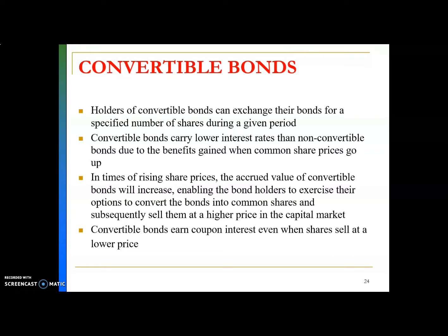Normally, convertible bond would carry lower interest rates than non-convertible bond. Convertible bond ni, dia punya coupon rate soalnya lebih rendah daripada yang normal bond ataupun yang plain vanilla bond. Why? Because convertible bond also comes with the benefit that the holder can convert the bond. So to offset the benefit gained by the bondholder, the convertible bond carries lower interest rates.